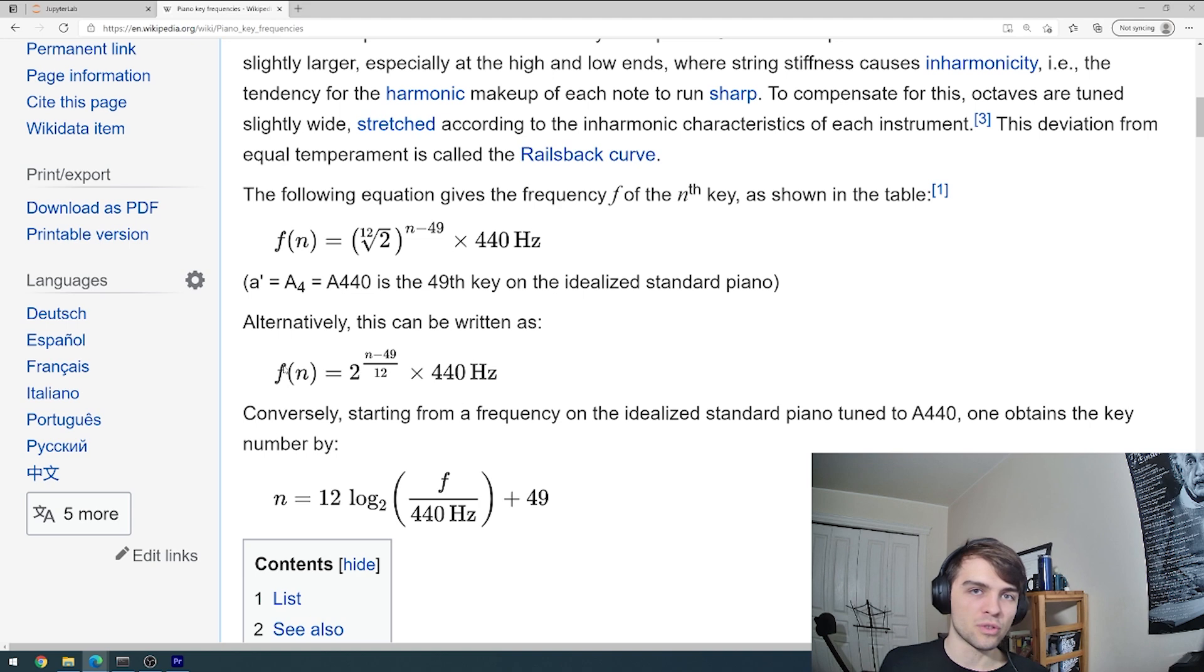So I have a formula here. What this gives you is the frequency of the nth key on the piano. So you have your list of terms that go zero, one, three, and so on. And you can map each one of those to the corresponding key on the piano and use this formula to get the frequency.